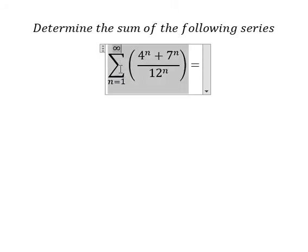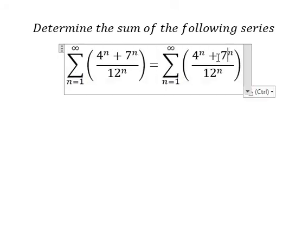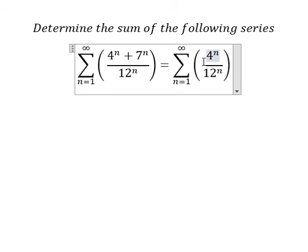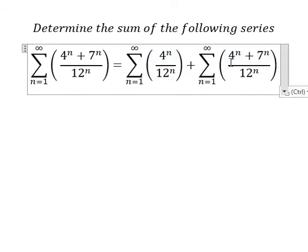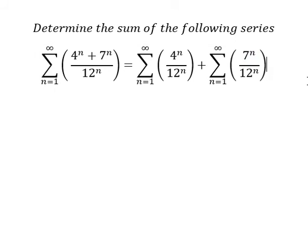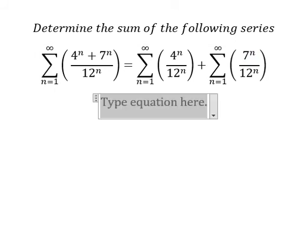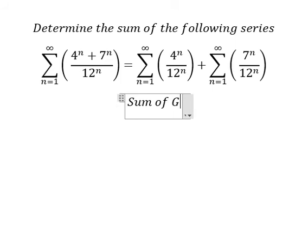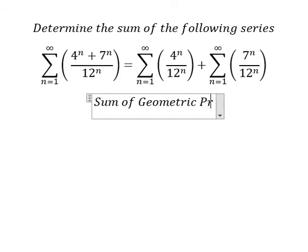The first one is 4 to the power of n over 12 to the power of n, and the second one is 7 to the power of n over 12 to the power of n. Now we can use the sum of geometric progression formula.